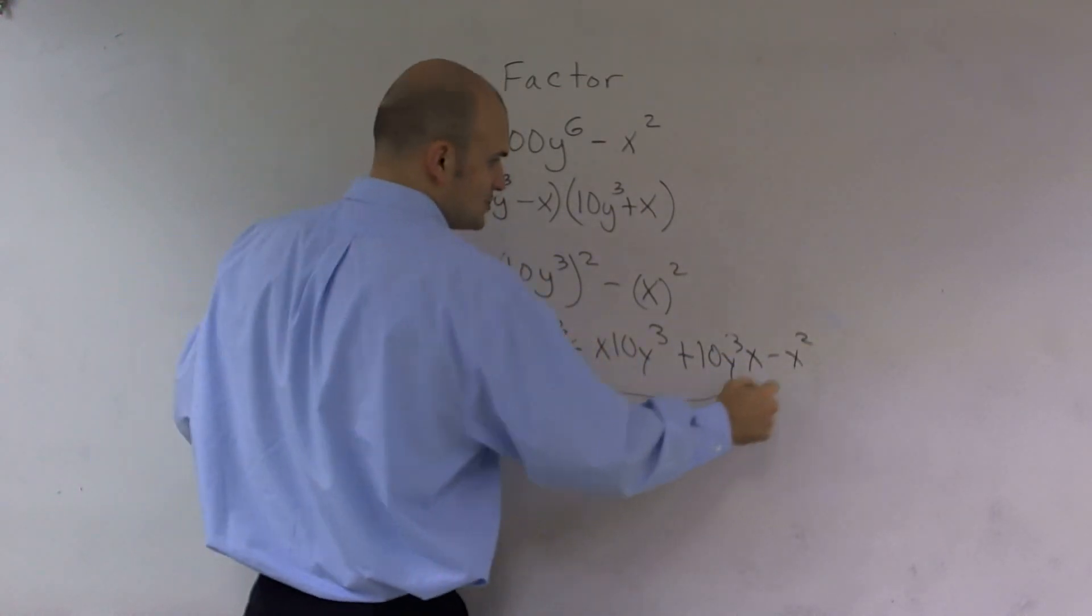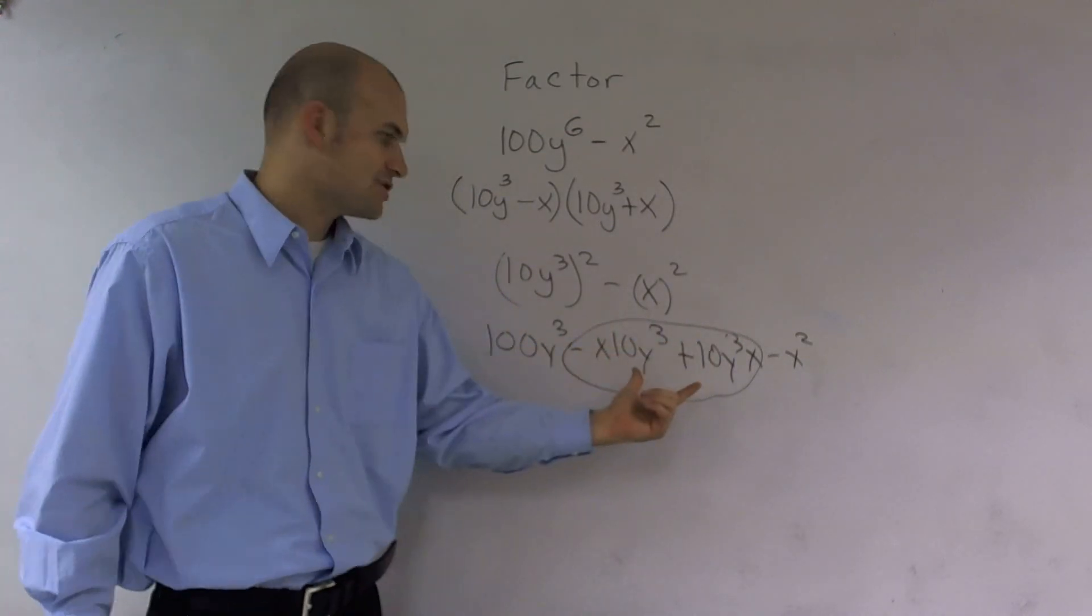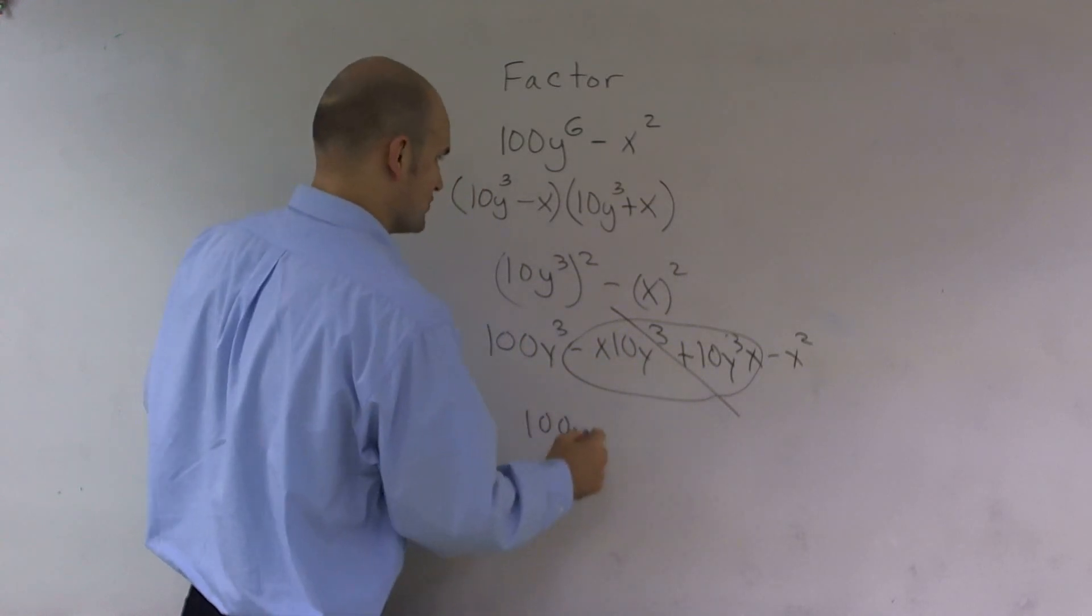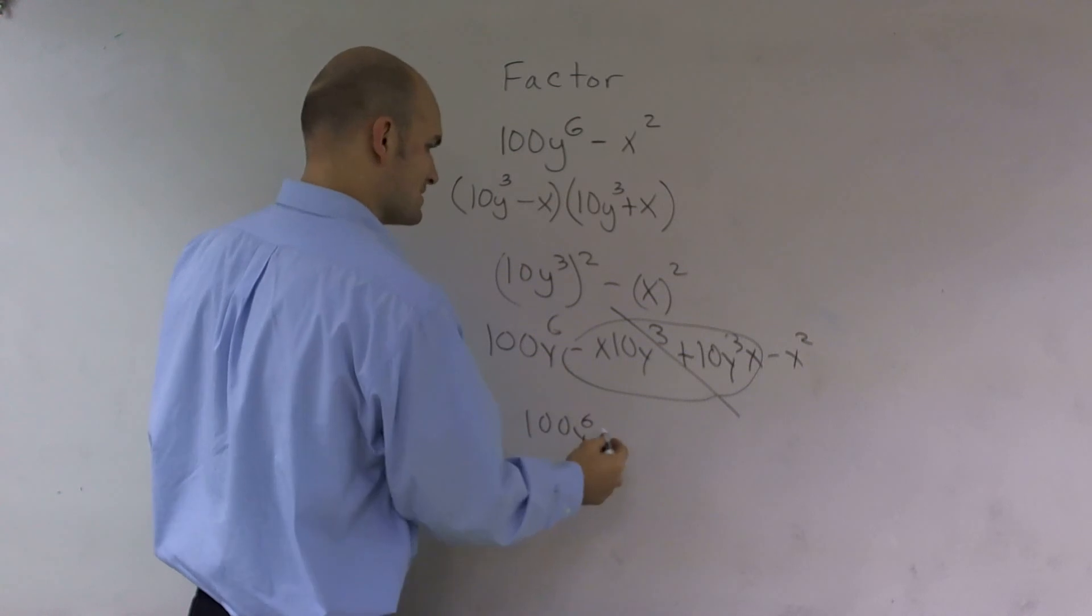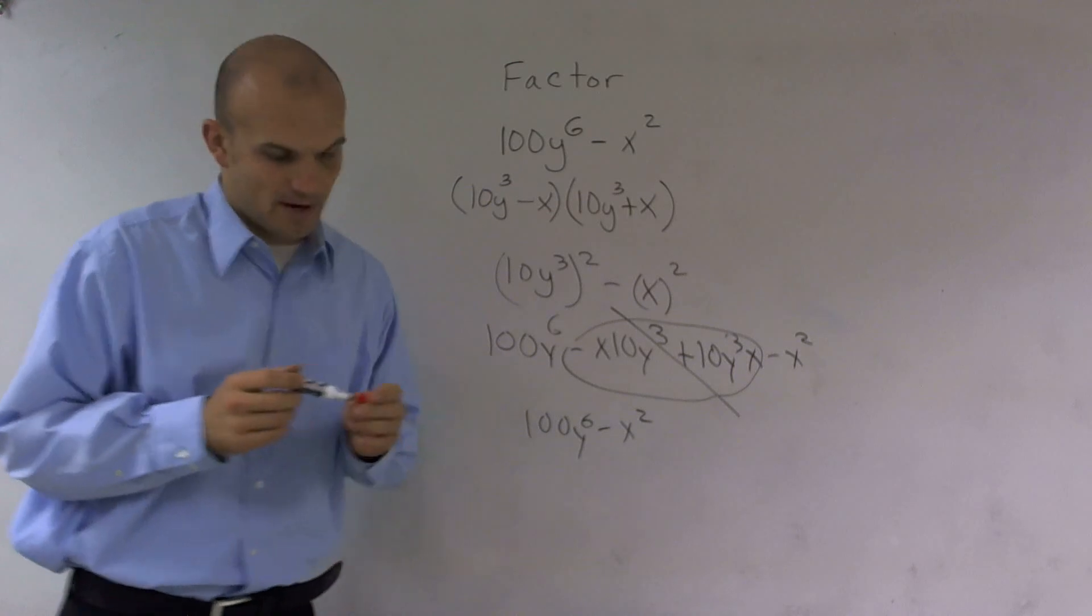And what you notice is these two terms, one's negative and one's positive, but they're exactly the same term. So therefore, they're going to cancel out, leaving us just with 100y to the sixth minus x squared. So that's how you factor that problem.